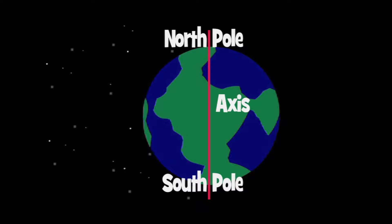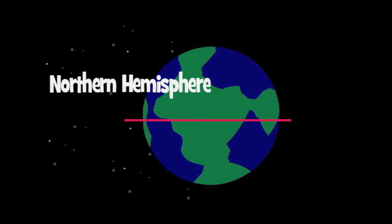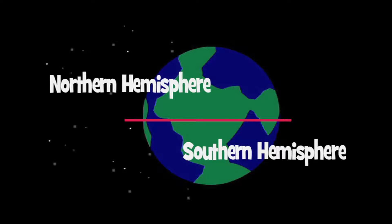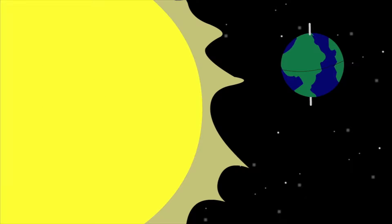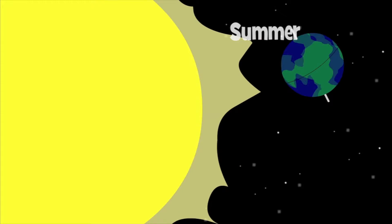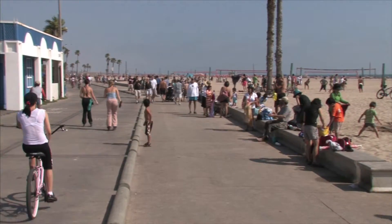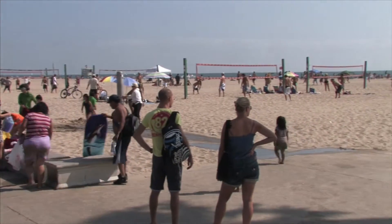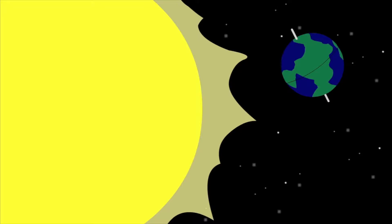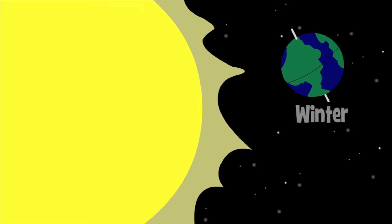The earth spins or rotates on its axis. In the middle of the earth, there is another imaginary line called the equator. The equator divides the earth into two halves called the northern hemisphere and the southern hemisphere. However, the earth is slightly tilted. When the north pole is tilted towards the sun, it's summer in the northern hemisphere. It takes in more sunlight. With more light, the days are longer and the weather is warmer. It's summer. At the same time, the south pole is tilted away from the sun. The southern hemisphere receives less sun. It's winter.